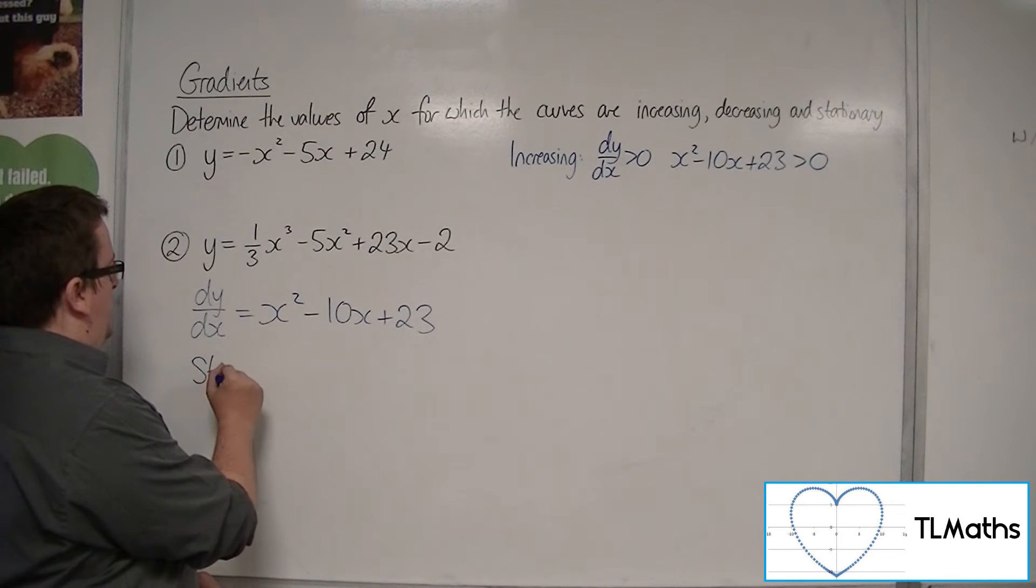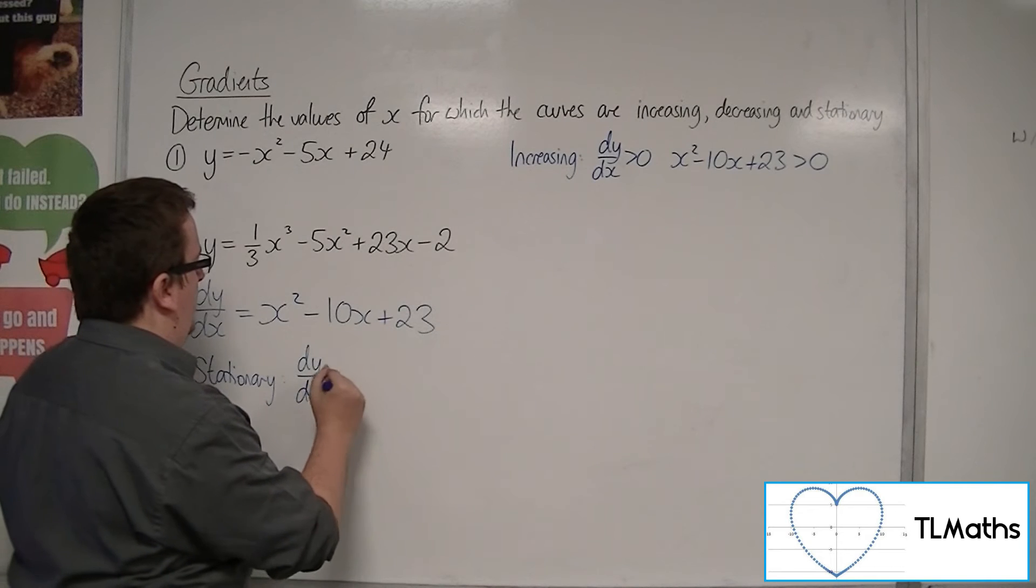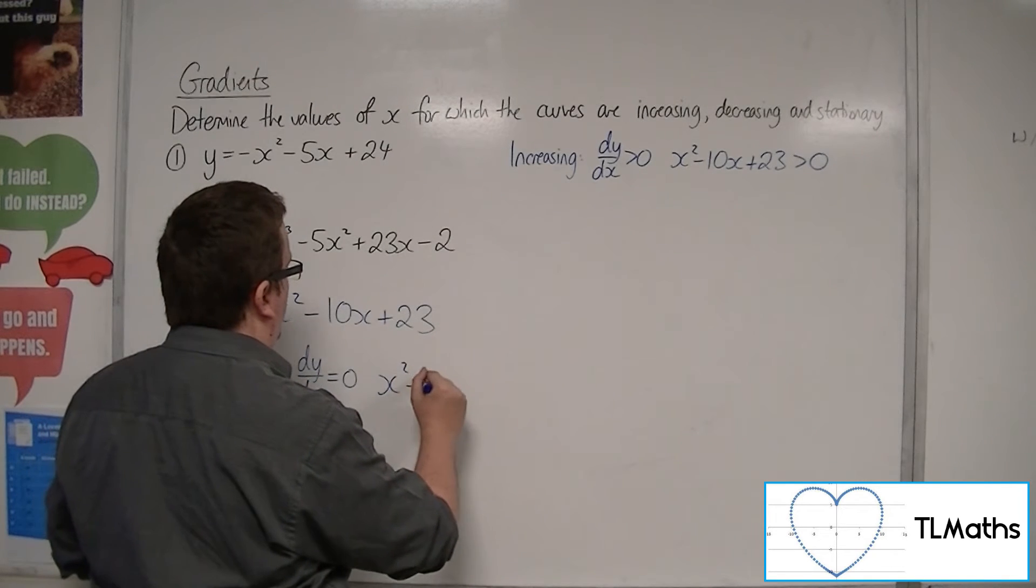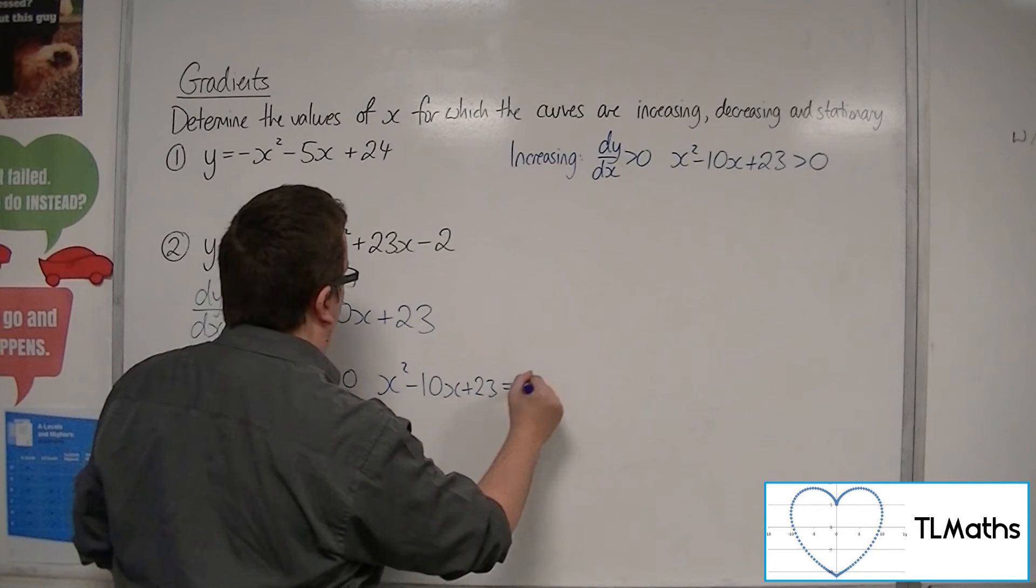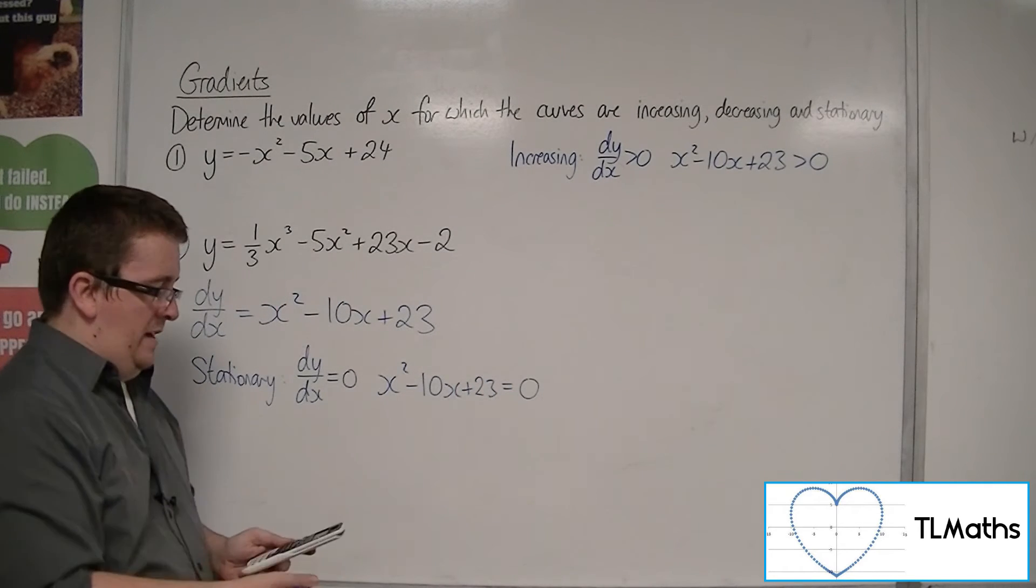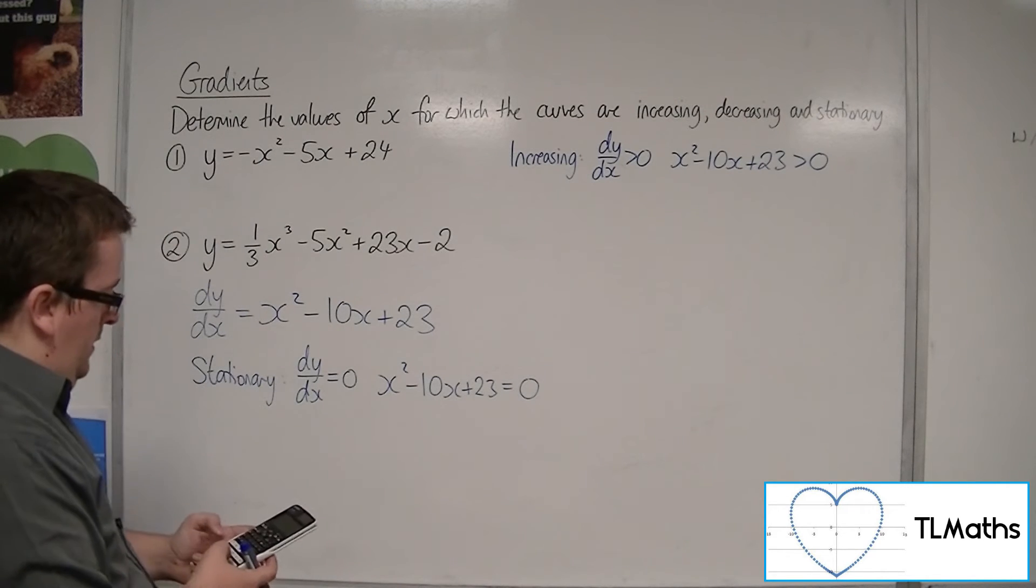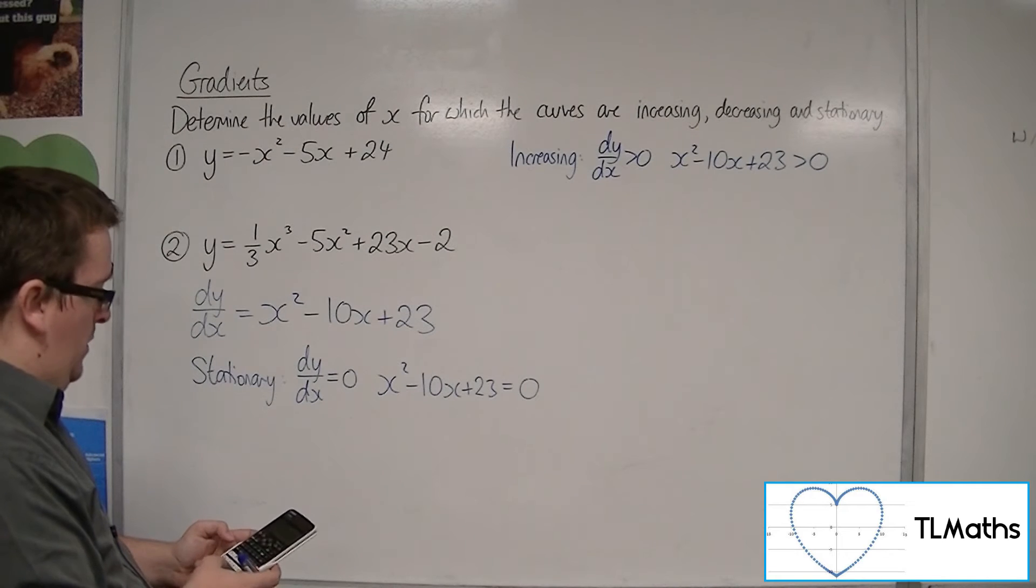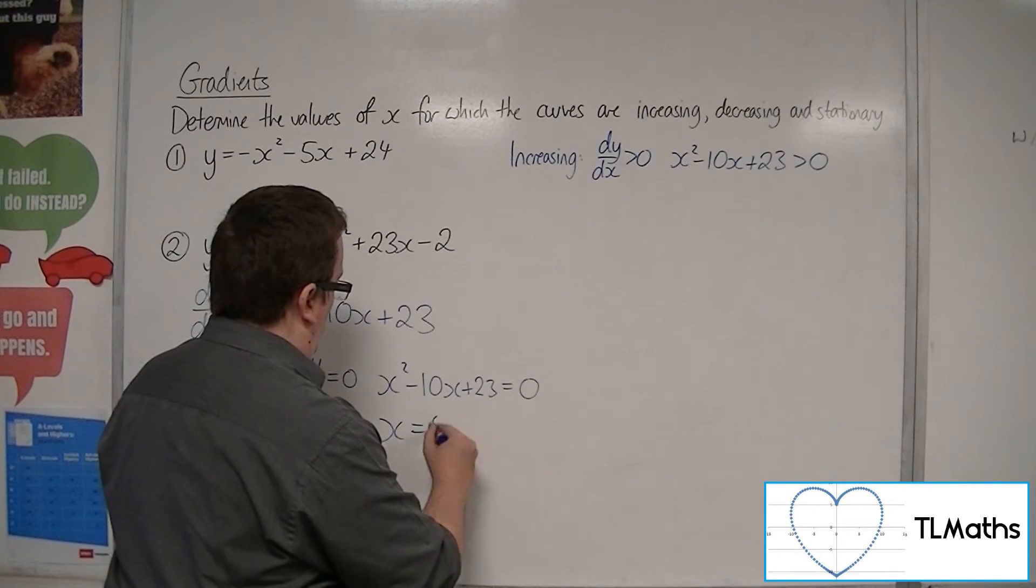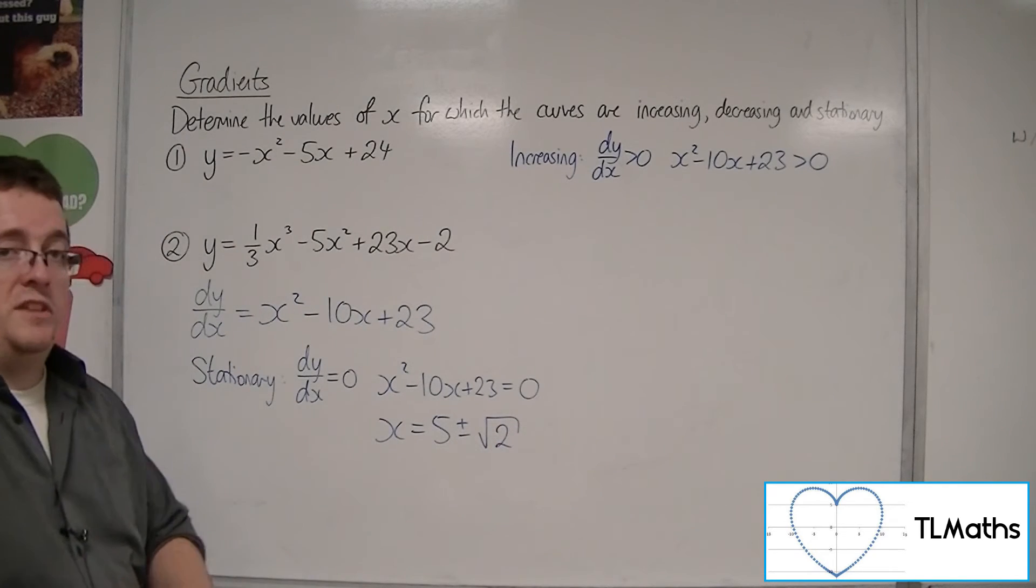Stationary when dy by dx is equal to 0. So, x squared minus 10x plus 23 is equal to 0. Now, that doesn't look like it's going to factorise. So, if we use the quadratic solver on our calculator, we can get 1 minus 10, 23. So, 5 plus or minus root 2. They're the solutions to that quadratic.